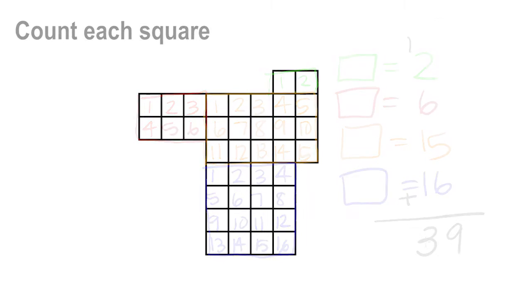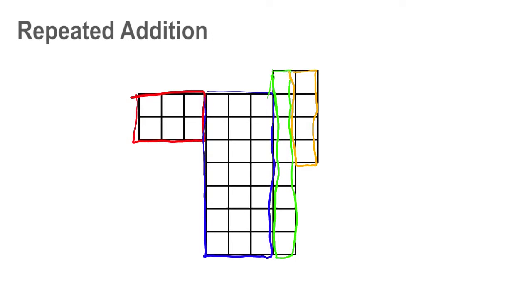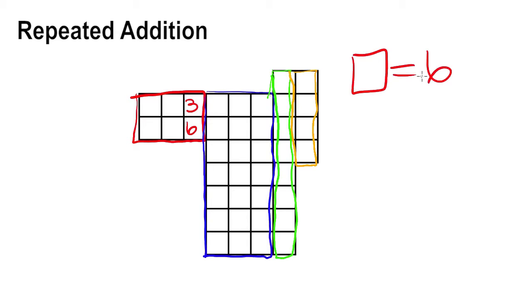Let's look at another way to separate this rectilinear figure into rectangles. To determine the area of each rectangle, I will use repeated addition. In the red rectangle, I see 3 squares in the first row, which means 3 squares in the second row, for a total of 6. The area of the red rectangle is 6.